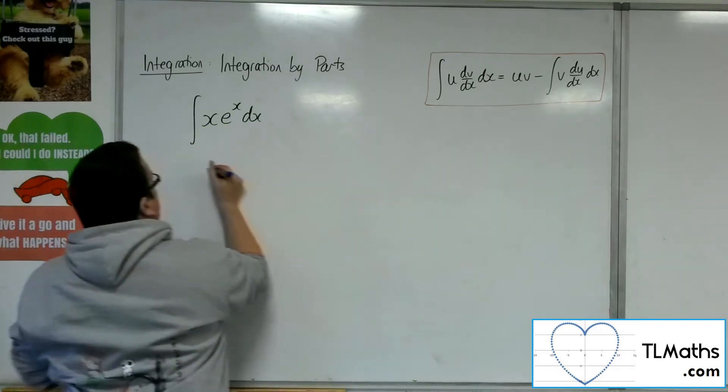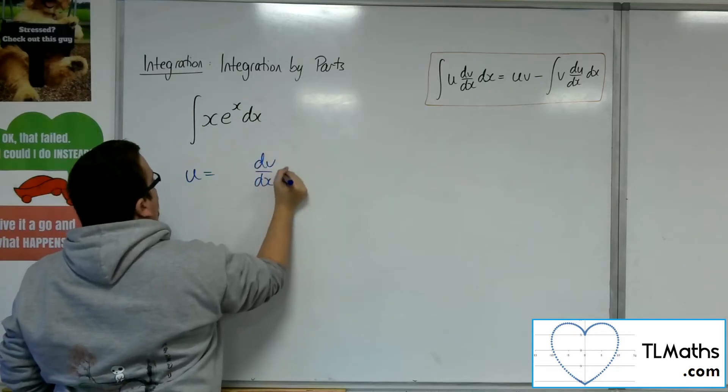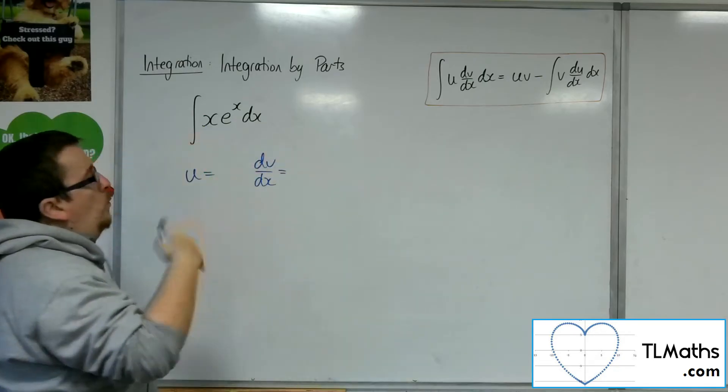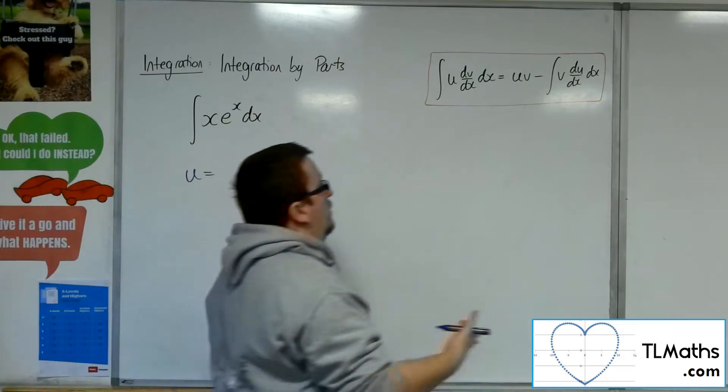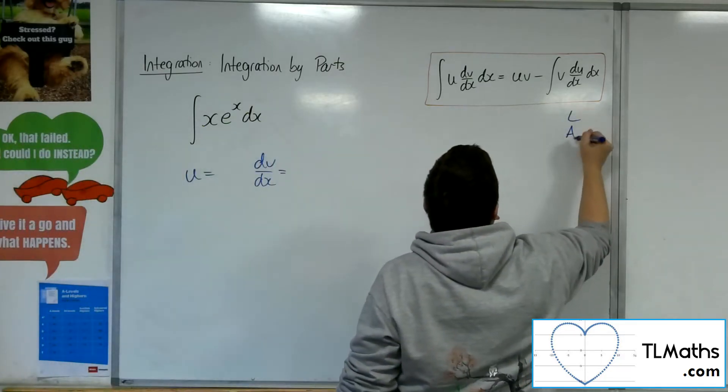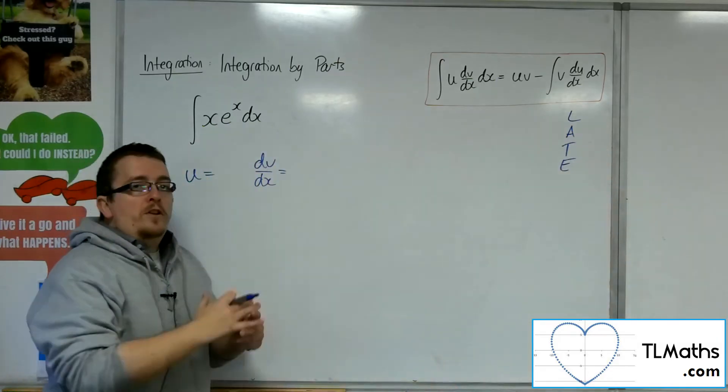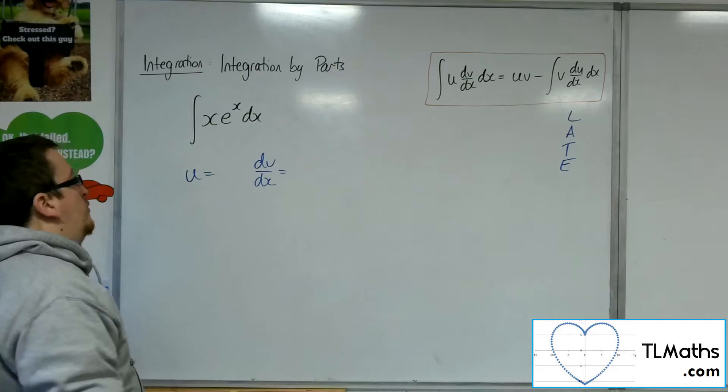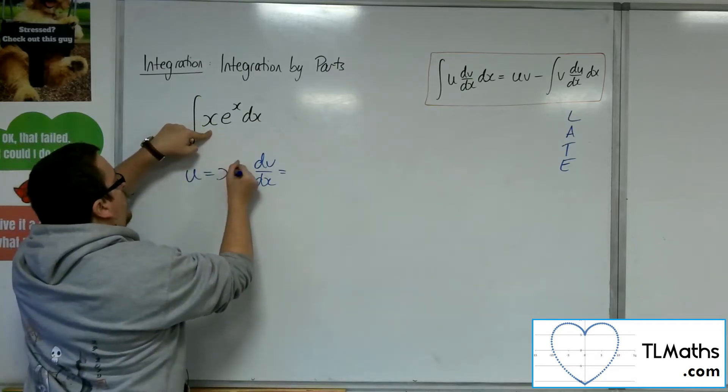So I need to pick the u and the dv by dx, which is which - which is the x, which is e to the x. So remember we use this rule labeled LATE. Do I have any logarithms? No. Do I have any algebra? Yes, I've got the x. So that is the choice of u.